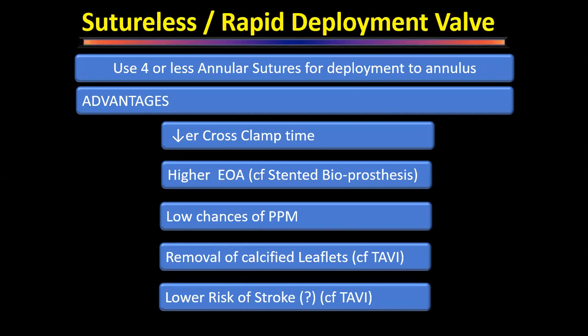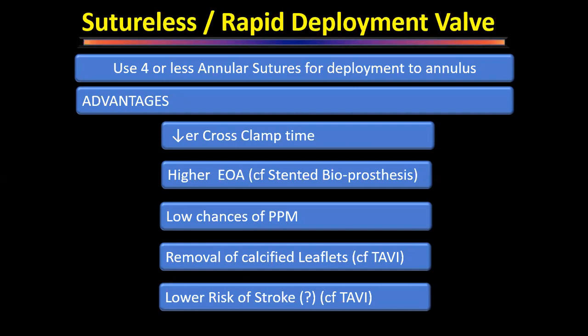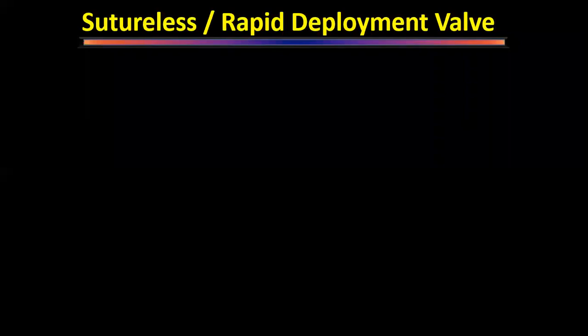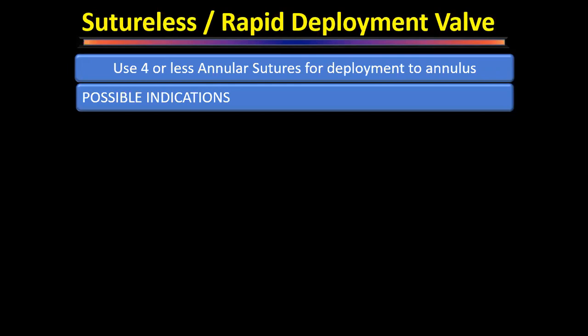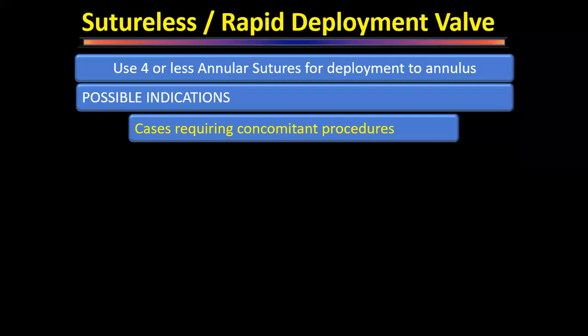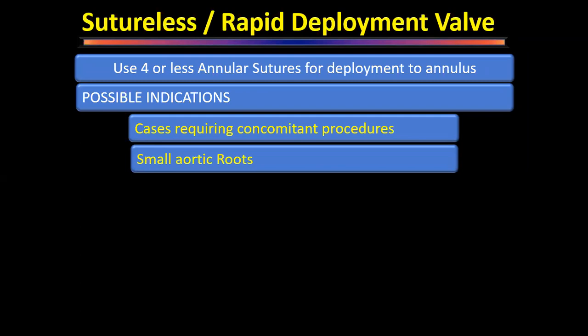Some studies have shown lower risk of stroke with sutureless valves compared to TAVI. Possible indications include: cases requiring concomitant procedures such as aortic plus mitral valve implantation, or combined coronary and aortic procedures in patients with co-morbidities where minimizing operative, cross-clamp, and bypass time is important. Also indicated for small aortic root with a bioprosthetic indication, where using a sutureless valve reduces patient-prosthesis mismatch risk.